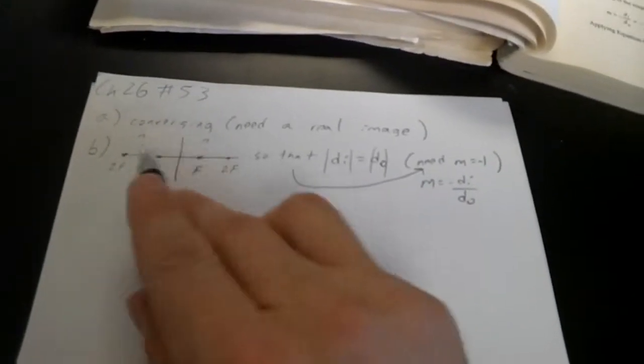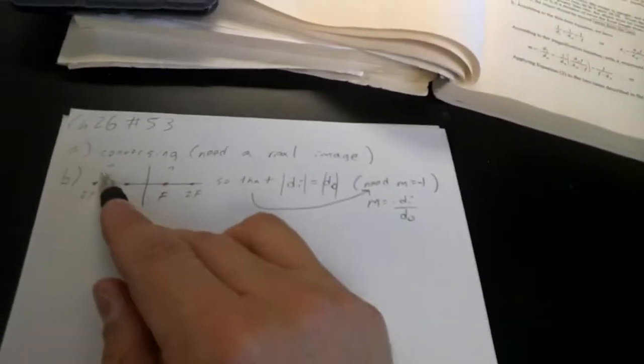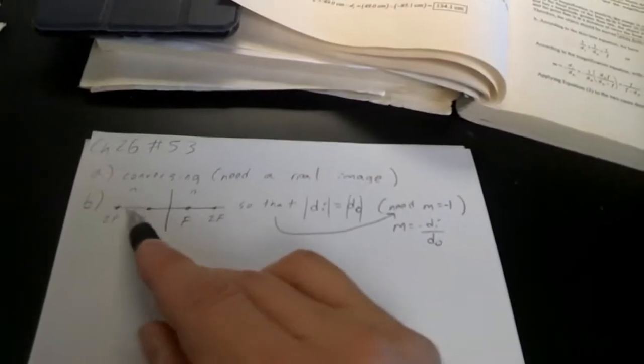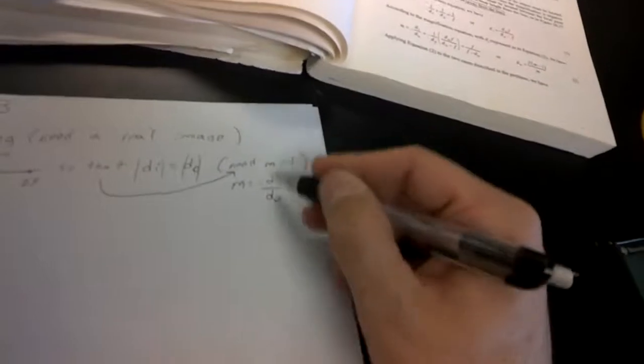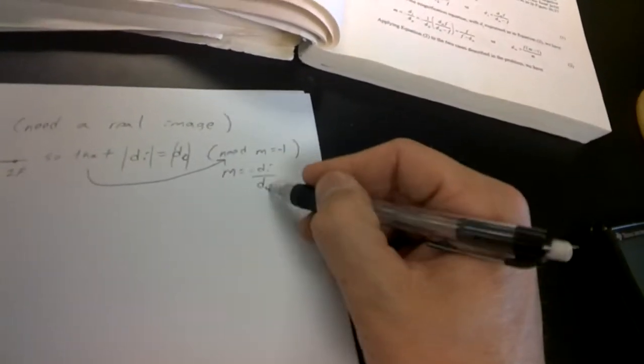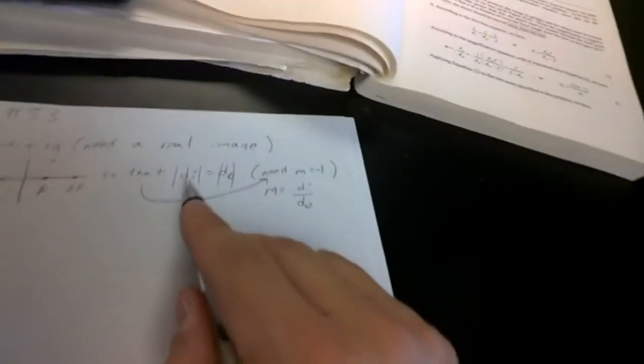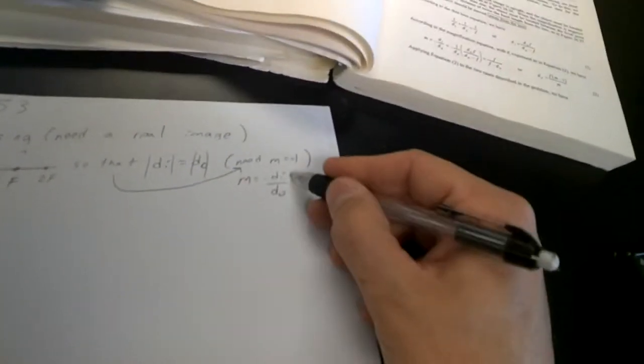I don't have anything drawn here yet because I'm not sure where everything's going to be, but there's my f's and my 2f's on both sides. The real focal, this is the lens, the object's over here somewhere. We need m to equal negative one. If I look at my equation, m equals negative di over do. So talking about the size of these, they have to be the same - di has to equal do if we're going to get one here.